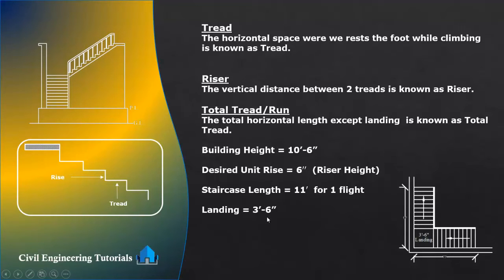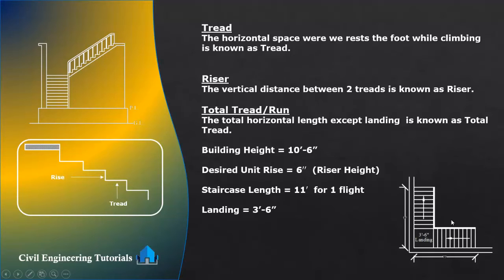Landing is 3 feet 6 inches. This is an L-shaped staircase with two flights separated by a square-set landing drawn at right angles to each other. This is one flight and this is another flight. The landing is 3 feet 6 inches on each side, making it a square-set landing with a 90-degree angle.